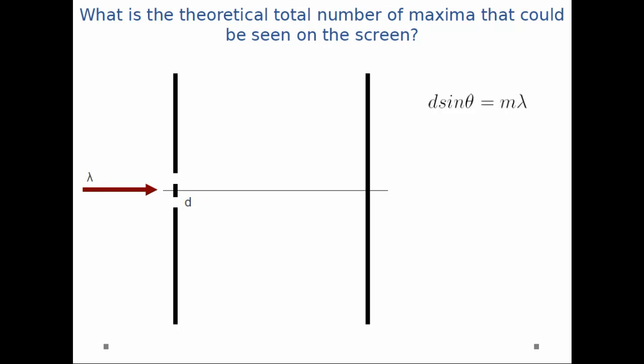We can start with our interference equation: d sin θ = mλ. If we want to find the biggest maximum possible, where should we look? We should look infinitely far down the screen, which corresponds to an angle θ of 90 degrees, so sin(90°) = 1.